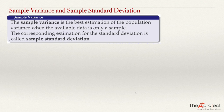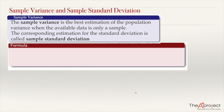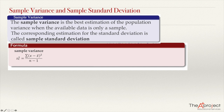The definition is in the formula. For the sample variance, the symbol will be S squared — similar to the population variance, where we have sigma. Here we have S only. And then it will be the sum of the deviations squared — the deviation from the mean, now from the sample mean — divided by n minus one.